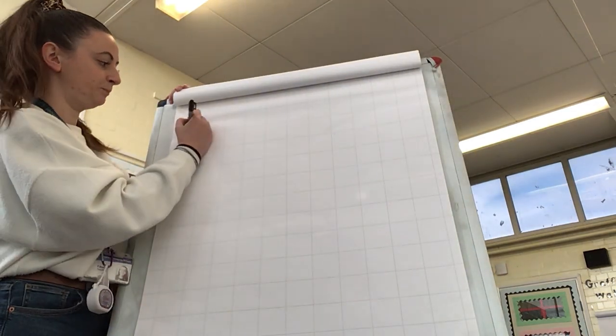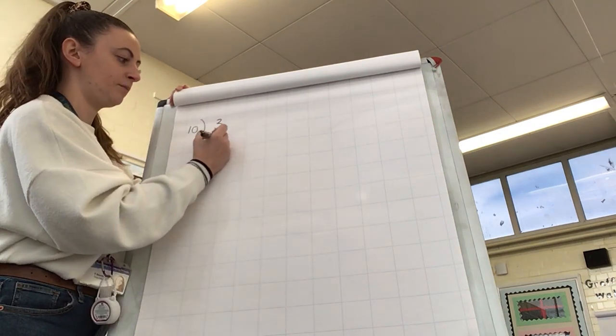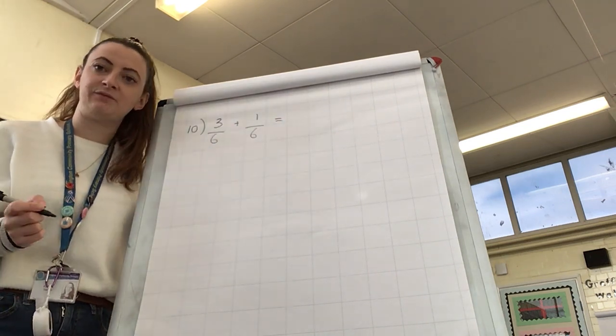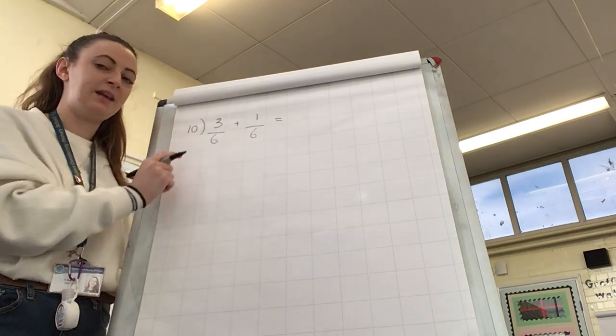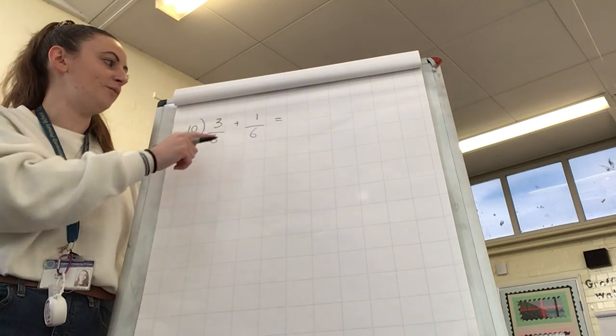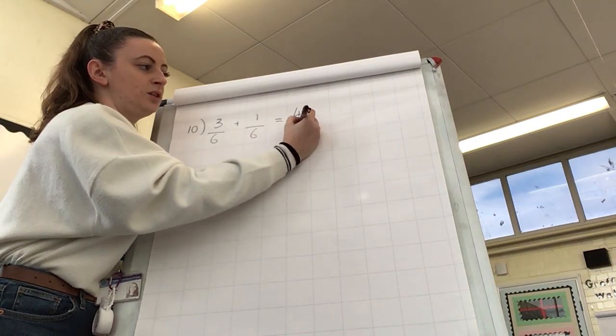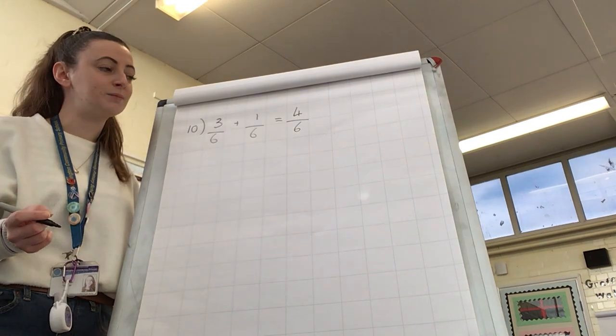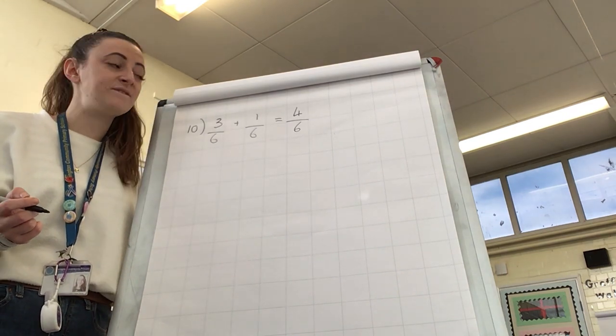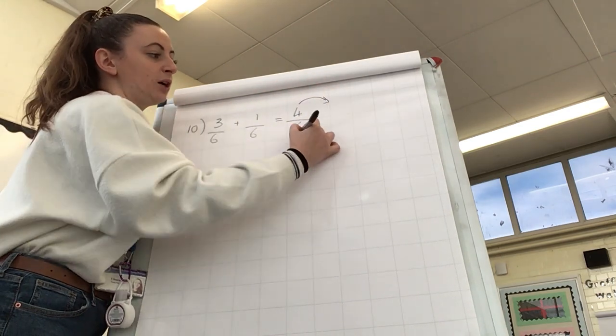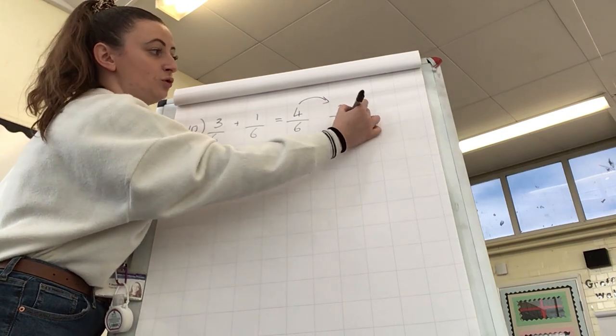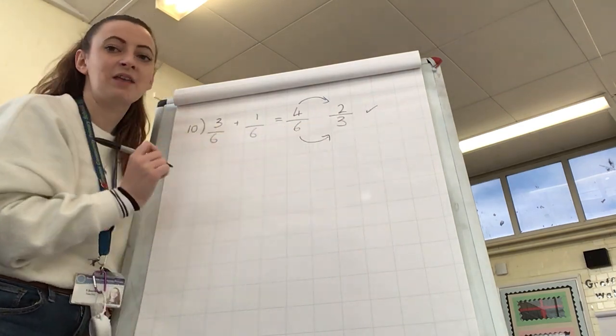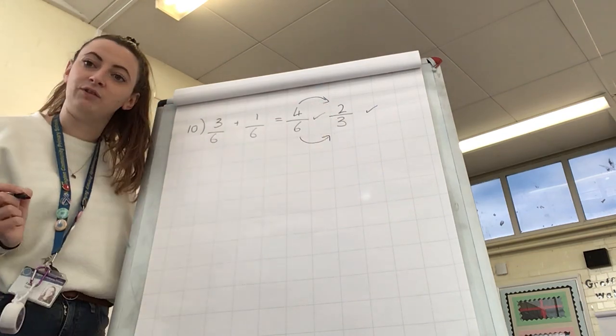Number ten. The question is three sixths plus one sixth. And luckily for us, we're adding these fractions together, and they've already got denominators that are the same. Both of those denominators are six. So all we need to do is add the numerators. Three plus one is four. The denominator stays the same as four sixths. Now, some of you may have taken this a step further and simplified your answer, because both of these numbers are even. They have both got a factor of two. They can both be divided by two. Four divided by two is two, six divided by two is three. The simplest our answer can get is two thirds. However, if you wrote your answer as four sixths, that is also correct, and you can give yourself a tick for that.